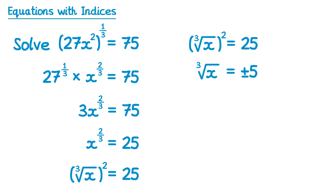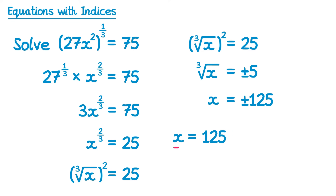Finally, we have the cube root of x on the left. To remove that cube root we can cube both sides. Cubing the cube root on the left just leaves us with x, and on the right we do plus or minus 5 cubed, so we end up with plus or minus 125. So we end up with two solutions: x equals 125 and also x equals negative 125.